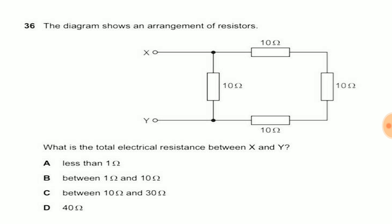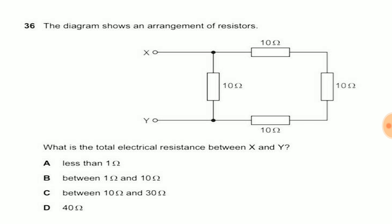Now we have to see this circuit very carefully: which resistors are in series combination and which are in parallel combination. Now let us move to this. See from this two red line and there is one arrow.